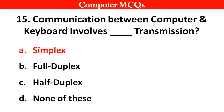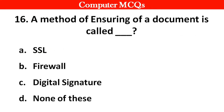Next question: A method of ensuring authenticity of a document is called — Right answer is option C — Digital Signature.